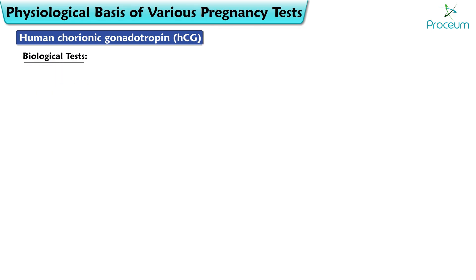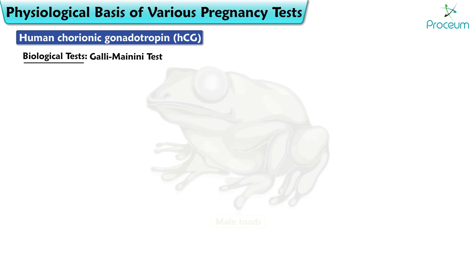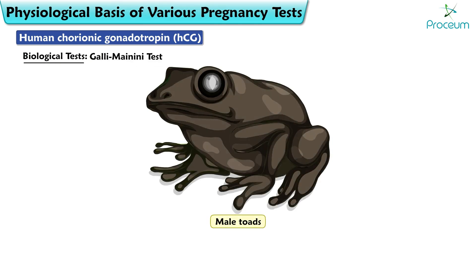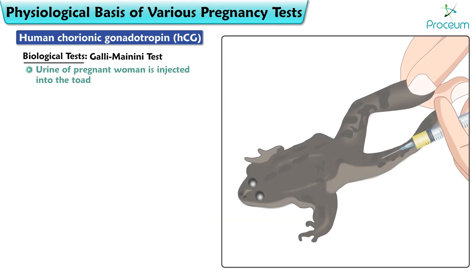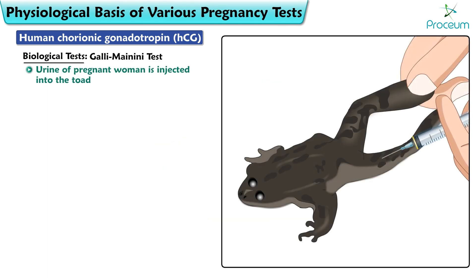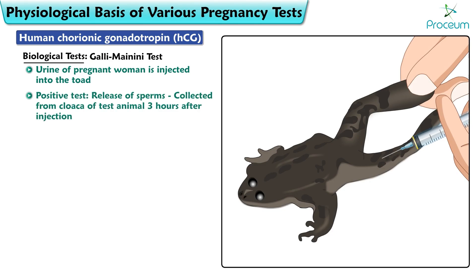Galli-Mainini Test: Male toads are used and the urine of a pregnant woman is injected into the toad. The positive test result is indicated by the release of sperms, which are collected from the cloaca of the test animal 3 hours after injection.